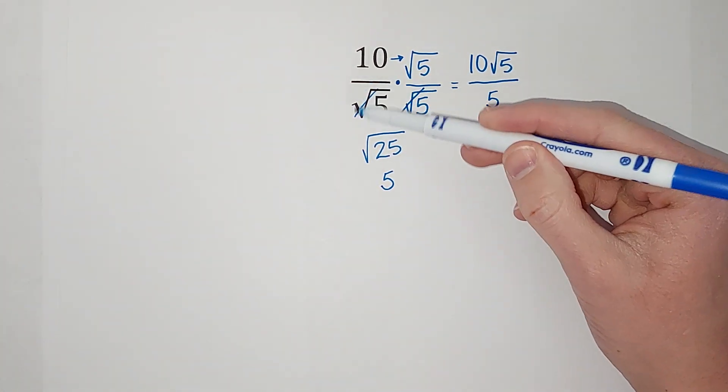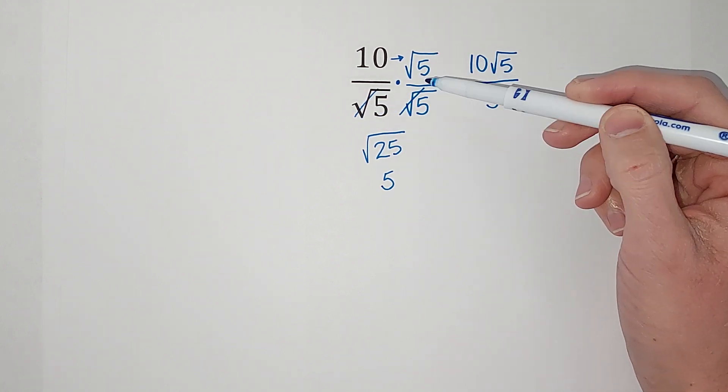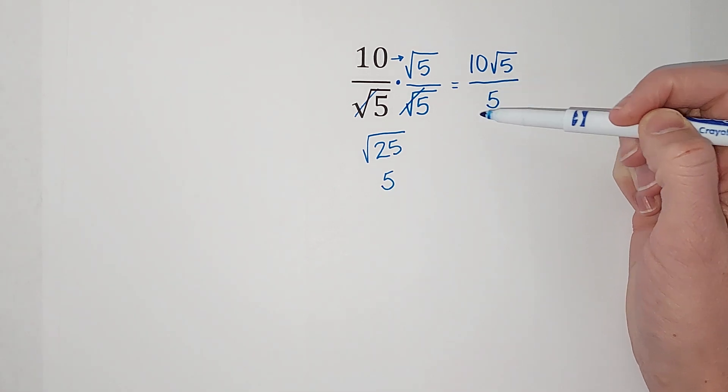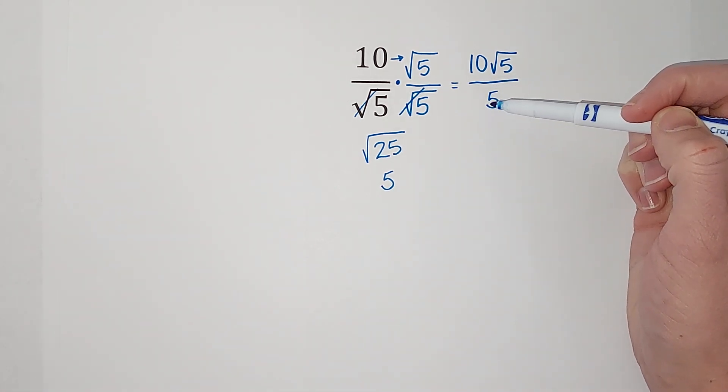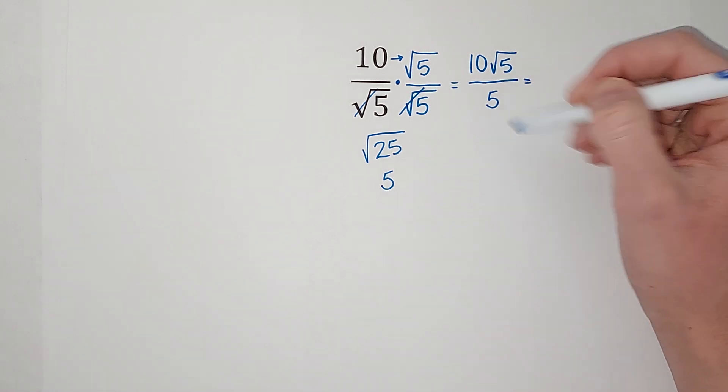So can you see why I did that? I multiplied the radical on the bottom - I multiplied by that on the top and bottom - because it got rid of the radical on the bottom. Now all I have to do is see if it simplifies.